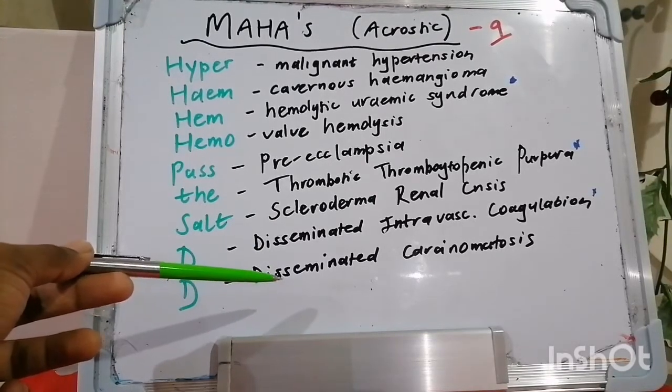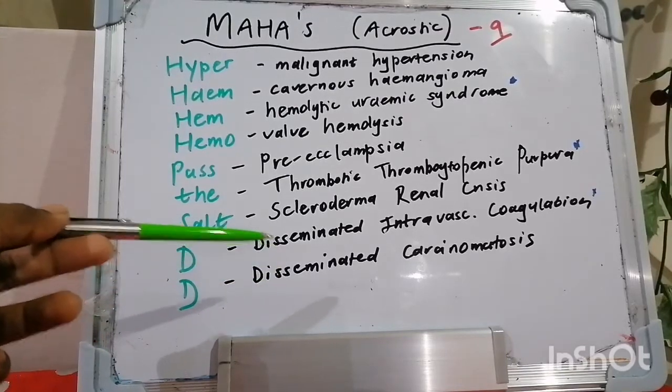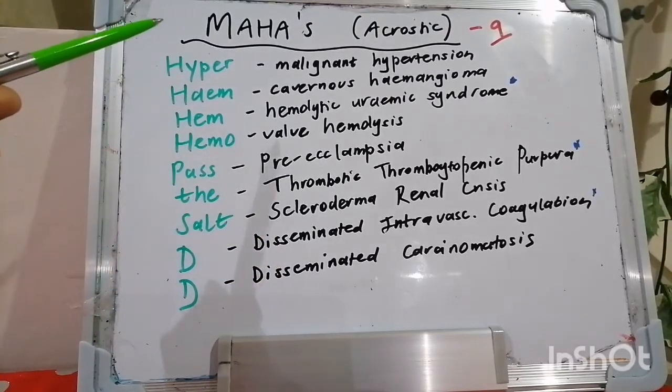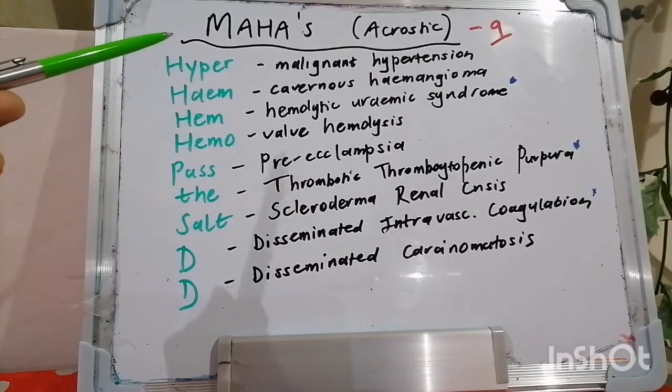SOD speaks to scleroderma and adrenal crisis. The two D's represent DIC — the infamous disseminated intravascular coagulation — as well as disseminated carcinomatosis. All of these things can cause microangiopathic hemolytic anemia.